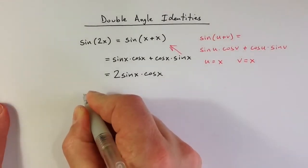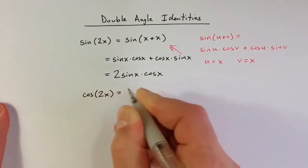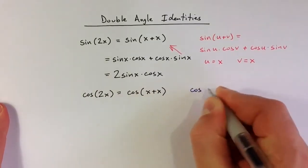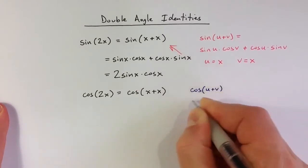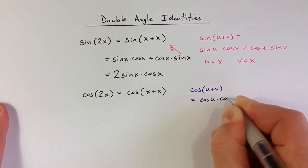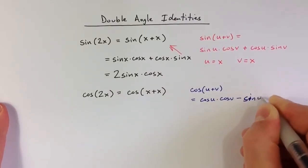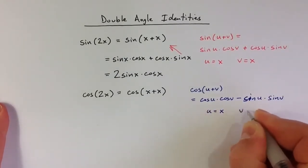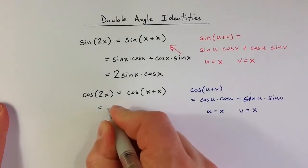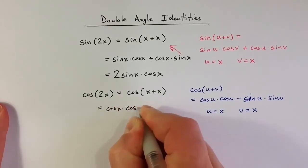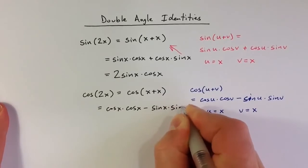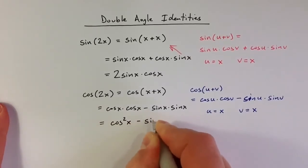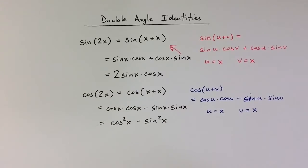In a similar way, we can come up with a double angle identity for cosine. I can think of cosine of 2x as cosine of x plus x. Using the angle sum identity for cosine — cosine of u times cosine of v minus sine of u times sine of v — with u and v both equal to x, we get cosine of x times cosine of x minus sine of x times sine of x, which simplifies to cosine squared x minus sine squared x.